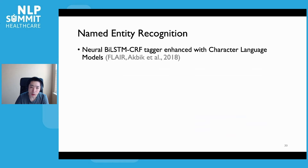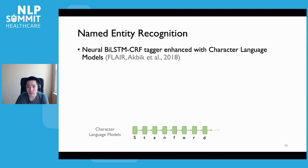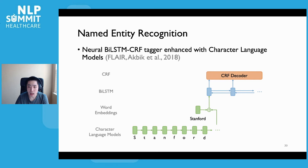Lastly, let's take a look at the named entity recognition module. We implemented the neural BiLSTM-CRF tagger enhanced with character-level language models, as in the Flair framework. This model runs two character-level language models over the input character sequence, one for each direction. The language model outputs are then concatenated with word vectors to augment a standard BiLSTM-CRF model. By pre-training the character-level language model on a massive amount of text, Stanza's NER model achieves near-state-of-the-art performance while maintaining low memory footprint and reasonable speed.